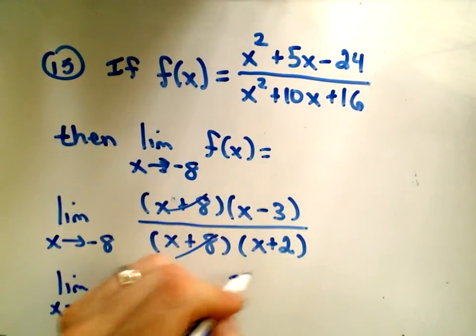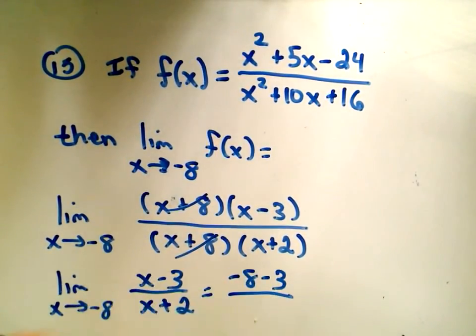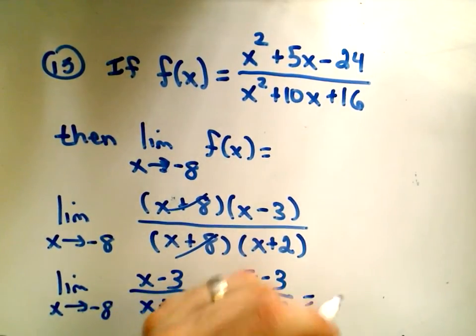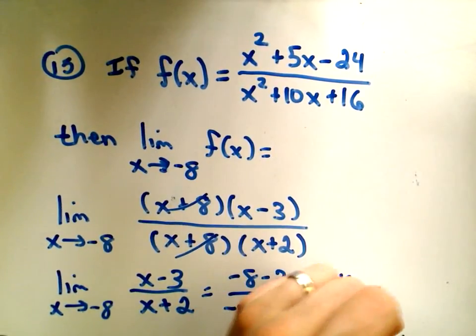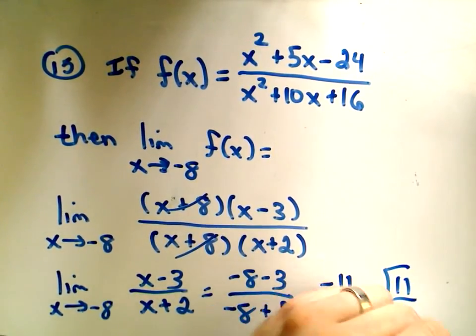Just plug and chug, we get negative 8 minus 3 over negative 8 plus 2, which is going to give us negative 11 over negative 6, or 11 over 6 as our answer.